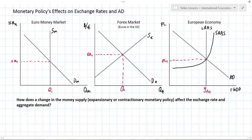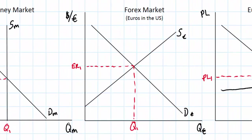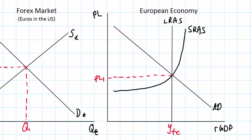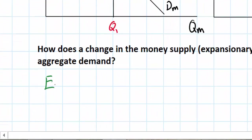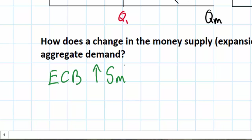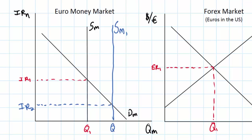We're going to walk through a scenario. We've got the European money market showing the supply and demand for euros determined by the European Central Bank, and we've got the Forex market for euros in the United States showing the dollar price of euros. Finally we've got the overall European economy showing aggregate demand and aggregate supply. Let's start with a scenario in which the European Central Bank increases the money supply through, for example, a bond purchasing program, causing nominal interest rates to fall. An increase in the supply of euros in the banking system to SM1 will cause the nominal interest rate in European banks to decrease to IR2 and the quantity demanded of money to increase to Q2.